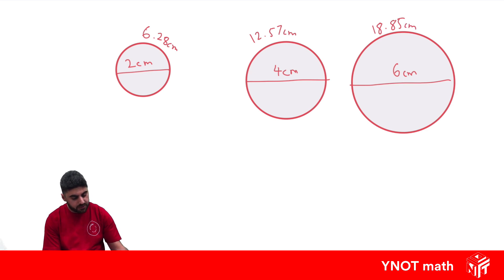Now what we're going to do is take the circumference and divide it by the diameter for all of them. The 12.57cm, the circumference, divided by the diameter of 4, and 18.85 divided by its diameter of 6.